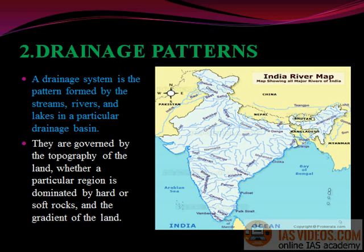A drainage system is the pattern formed by the streams, rivers, and lakes in a particular drainage basin. They are governed by the topography of the land, whether a particular region is dominated by hard or soft rocks, and the gradient of the land.